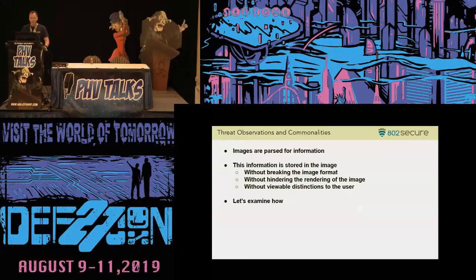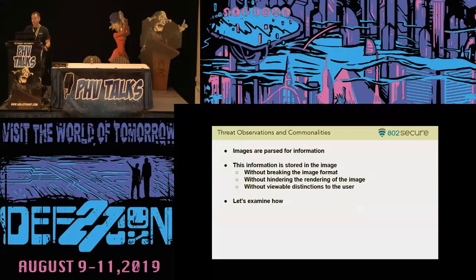Some observations, then. You can see there's a lot of images out there as part of stego-augmented malware where the images themselves are being parsed for information. The interesting thing about this is, first and foremost, it doesn't break the image format. When I dig a little bit deeper in the next few slides into the how, the image is still rendered totally fine, so it looks completely benign. It does this also without hindering the ability to render the image, and there are no viewable distinctions to the user either. So if it's an LSB technique or something else, you visually can't see it.